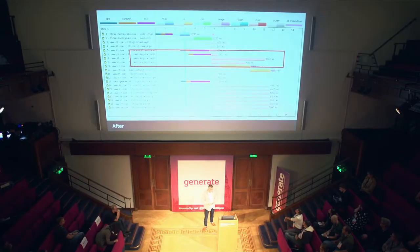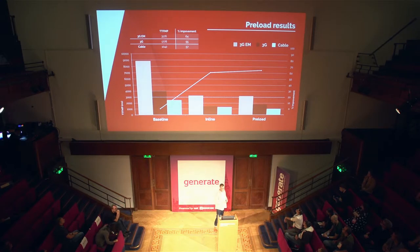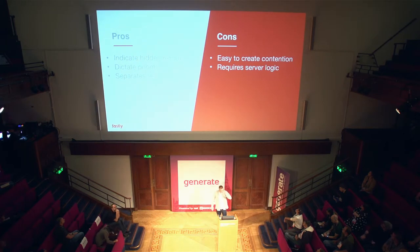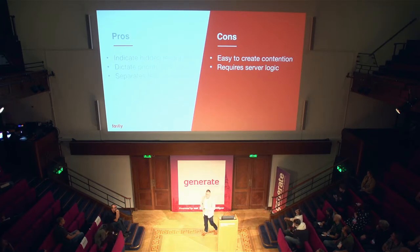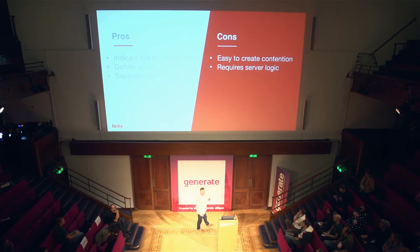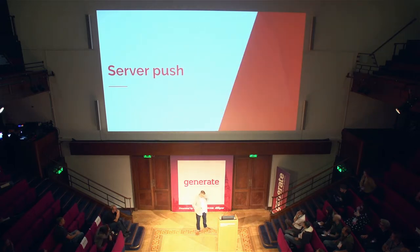I've been working in the performance industry for a very long time, and there hasn't been a single trick like this with such a dramatic impact on the loading of screens. That now gives us a 65% improvement on time to first meaningful paint. We've hit our budget on cable at 1,000 milliseconds, and we're very close on 3G at 3,000 milliseconds. It has pros and cons: it enables us to indicate hidden resources, but it's really easy to create contention on the network. A developer might add all assets as preload and have the browser download all of them — all you're doing is creating contention. With great power comes great responsibility.